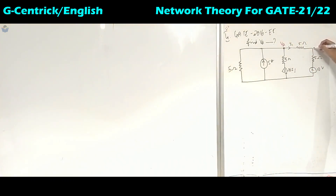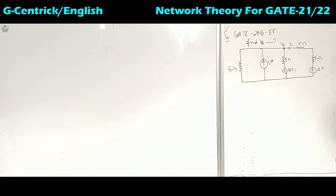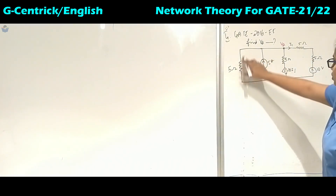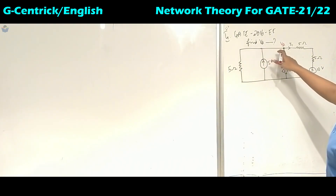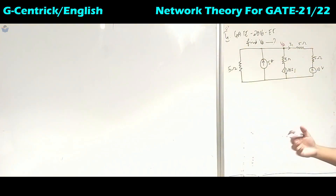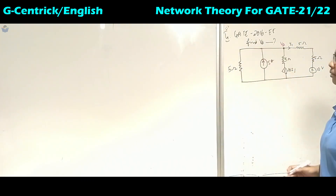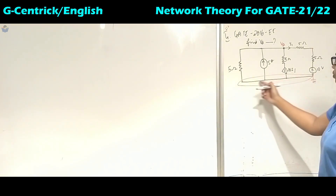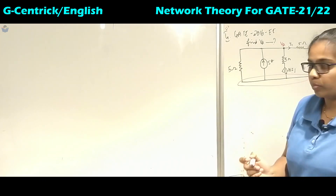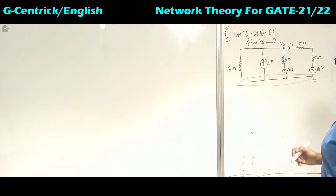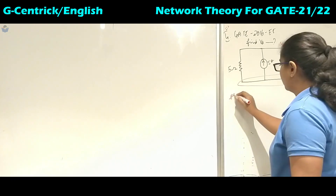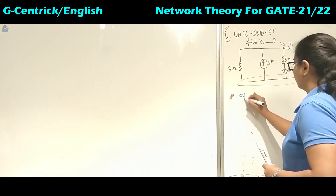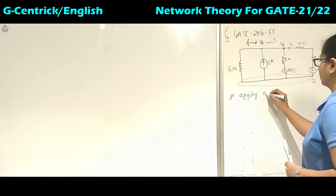This is one node. Here also there is one more point, but it's not a node because there are only two branches, so it cannot be a node. This potential and this potential are the same because there is no element present between these branches. Here is the reference node which is grounded, also having the same potential. So to find the value of VA, we will apply nodal at VA.